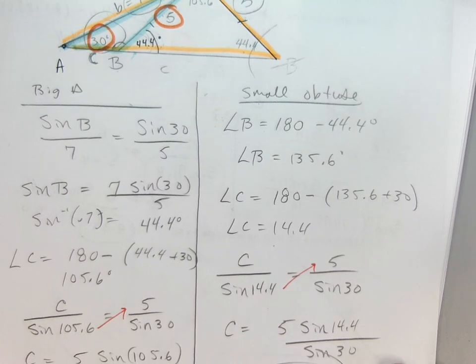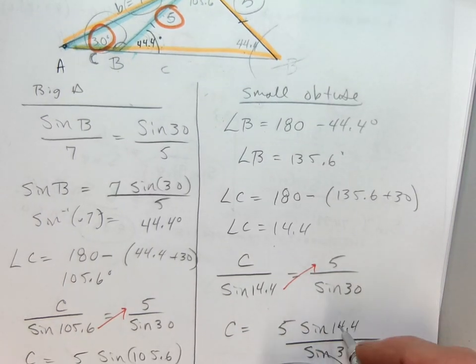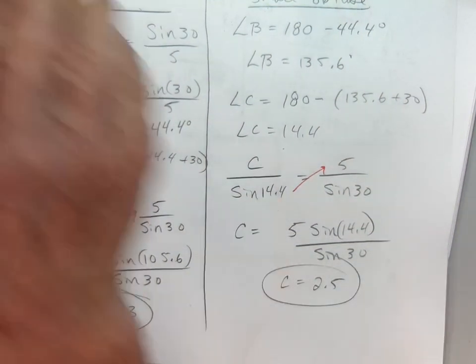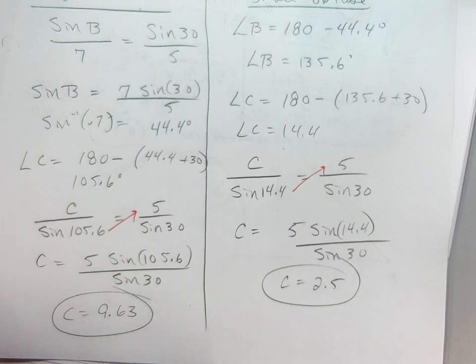5 times the sine of 14.4. Close parentheses. Divide by the sine of 30 and I got 2.5. So that is the ambiguous case. And that's all I have for today. If you have any questions, come see me and check out the homework.